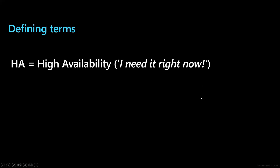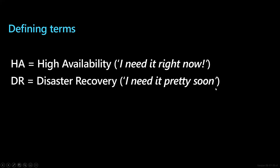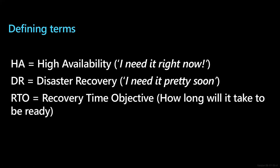DR, or disaster recovery, on the other hand, is not seconds — it's more like minutes, hours, or even in some situations days. You can't really talk about HA and DR without talking about recovery time objective (RTO): how long will it take to be ready? In a disaster recovery scenario for a non-critical system — like a BI or business intelligence reporting system — you might be okay with 24 hours until it's back up. That's your recovery time objective.